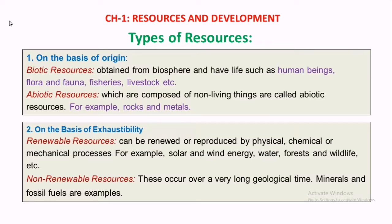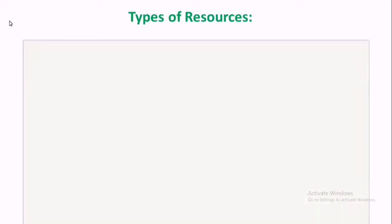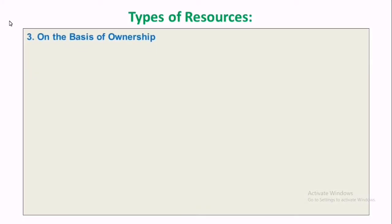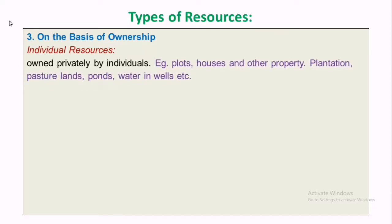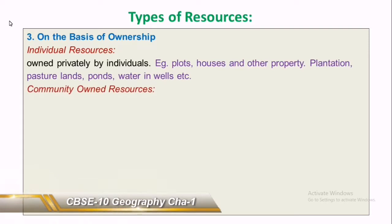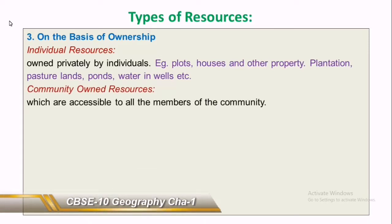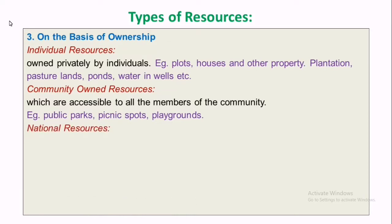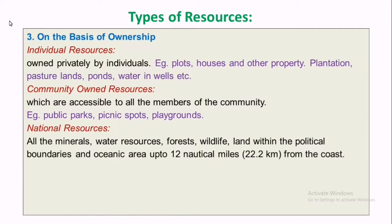The third classification of resources is on the basis of ownership. First, individual resources — owned privately by individuals, such as plots and houses. Second, community-owned resources — which are accessible to all members of the community, such as playgrounds and public parks.